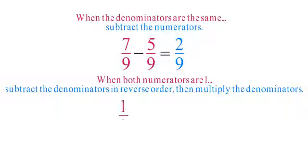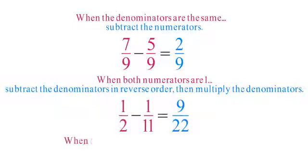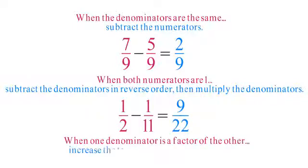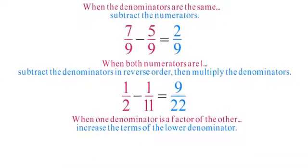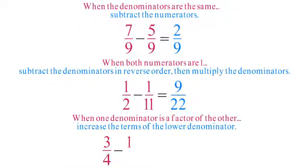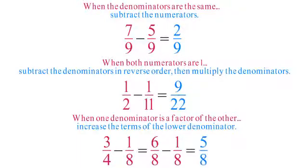For example, 1 half minus 1 eleventh equals 9 over 22. And when one denominator is a factor of the other, you can increase the terms of the lower denominator and then subtract. For example, 3 fourths minus 1 eighth equals 6 eighths minus 1 eighth, which equals 5 eighths.